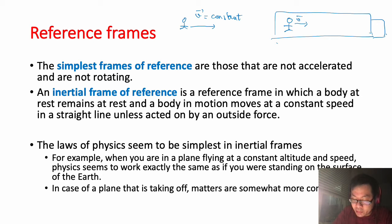...and they walk constantly, but compared to another person outside, it seems different. So the laws of physics seem to be simplest in inertial frames. If we consider the person in an inertial frame, it's very simple. That's the reason why we have to choose a reference frame when we analyze relativity in physics.